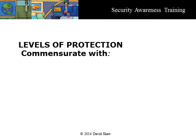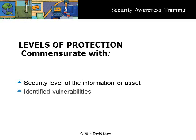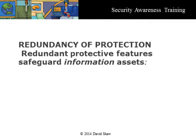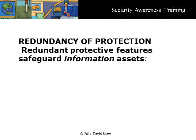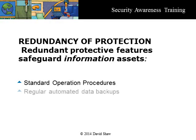Information systems should have several levels of protection. The level of protection should be commensurate with the security levels of the information and assets involved. The protection must also take into consideration the identified vulnerabilities and threats to the information system. Information should be protected by redundant protective features to safeguard information assets. Protection features such as standard operating procedures and information backups must be exercised and tested. Backups should be stored at an off-site location.